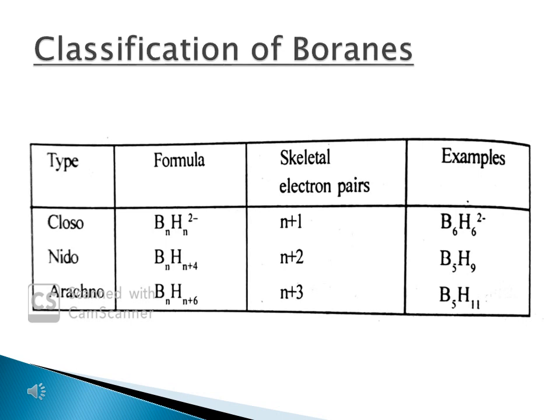Closo boranes are represented by the formula BₙHₙ²⁻. Skeletal electron pairs are N plus 1, and the example is B6H6²⁻. Nido boranes are represented by the formula BₙHₙ₊₄. Skeletal electron pairs are N plus 2, and the example is B5H9. Arachno boranes are represented by the formula BₙHₙ₊₆. The skeletal electron pairs are N plus 3, and the example is B5H11.